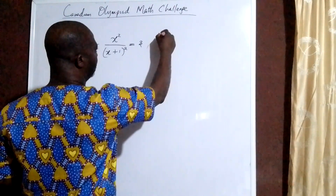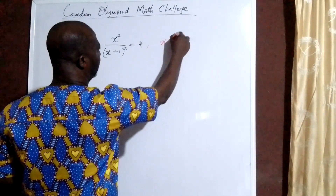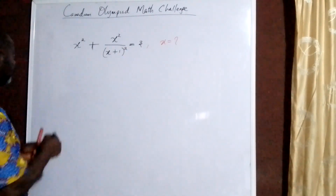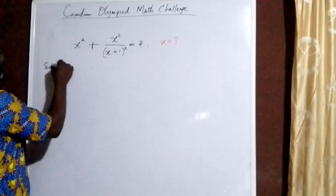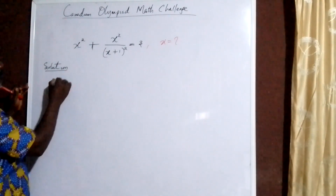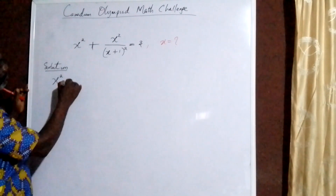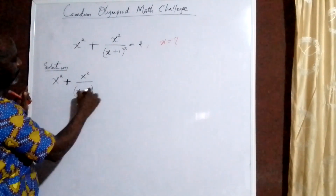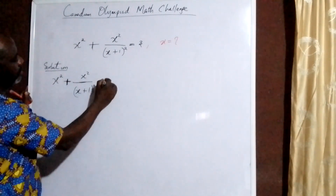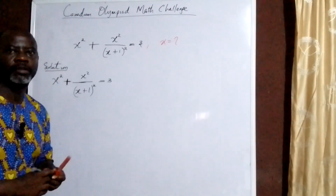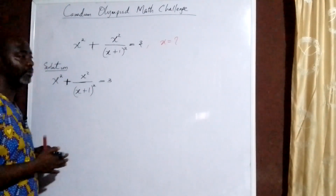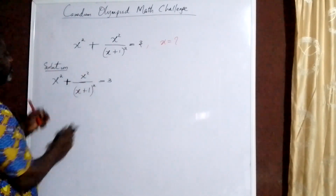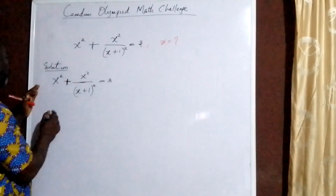We are going to find the possible values of x. Let's start. First I will write down the question and the solution here. We have x squared plus x squared all over (x+1), all squared, equal to 3. We are going to be dealing with the left hand side. You can see that x squared is common to both terms, so what we do is to factorize x squared.